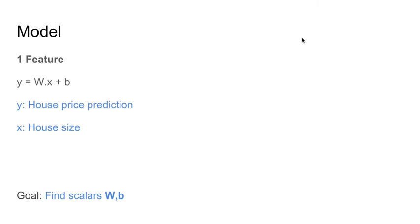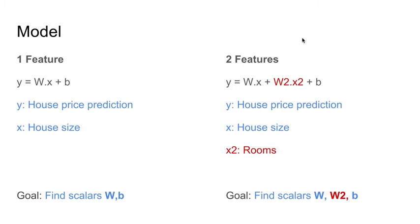For one feature, we use linear regression y equals to wx plus b, where y is the value we are trying to predict, and x is the house size that we have. To get a good prediction, we need to find good values of w and b. When we have more features, for instance we have rooms which is x2, now the prediction y depends on x2 as well, but it also depends only on a fraction of x2, therefore we have the coefficient w2. So now to get a good prediction for y, we have to find not only w and b, but also w2.